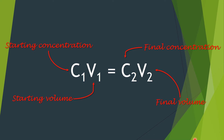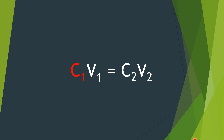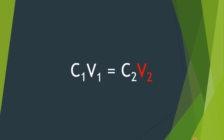C1 indicates the starting concentration, V1 indicates the starting volume, C2 equals the final concentration, and V2 stands for the final volume. If you have three of the four variables, you can work out the other one. For example, to find the starting concentration, rearrange the equation by dividing both sides by V1, giving C1 = (C2 × V2) / V1. Similarly, to find the final volume, take C2 over to the other side.